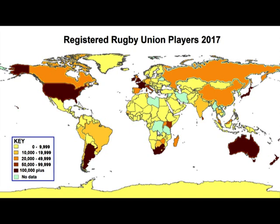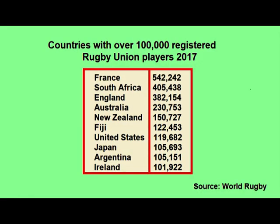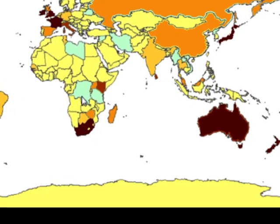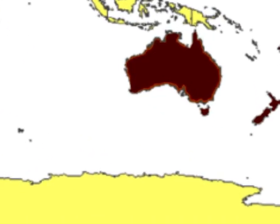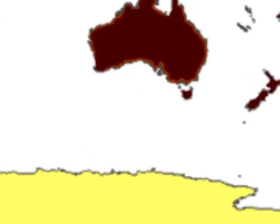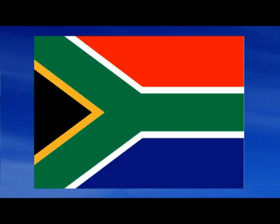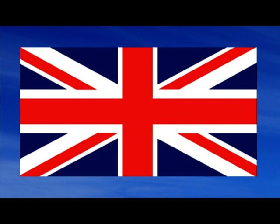Another example of a dispersed cultural activity is where most of the world's registered rugby players come from. Figures from 2017 show that countries with more than 100,000 registered rugby players are dispersed around the world — in countries as geographically far apart as New Zealand, Japan, South Africa, Argentina, and the United Kingdom.